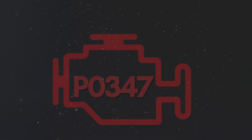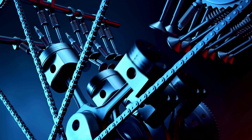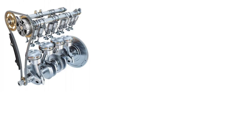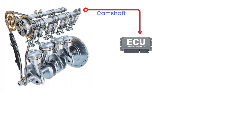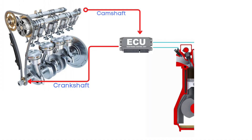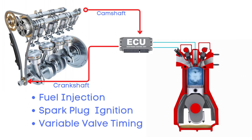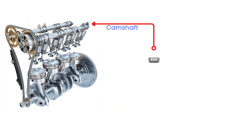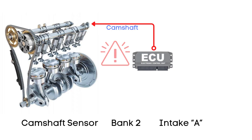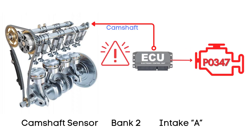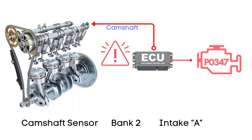Now let's learn why P0347 was triggered. The camshaft position sensor keeps track of the exact position of the camshaft as it rotates, and constantly sends this signal to the ECU, or engine control unit. The ECU doesn't just rely on this one signal — it also takes in information from the crankshaft position sensor, engine speed, and engine load. With all this data, the ECU can precisely control fuel injection, ignition timing, and even when the valves open and close. But if there's a problem with the camshaft position sensor circuit, the ECU can't get the right camshaft data, and it triggers the P0347 code.